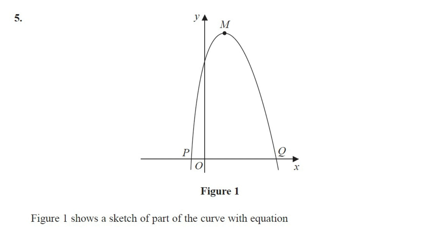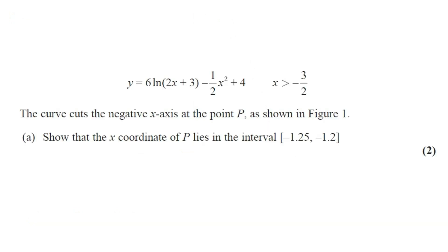Figure 1 shows a sketch of part of the curve with the equation y equals 6 ln(2x plus 3) minus half x squared plus 4. The curve cuts the negative x-axis at the point P as shown in figure 1. Part A: show that the x-coordinate of the point P lies in the interval negative 1.25 comma negative 1.2. This question got two marks.